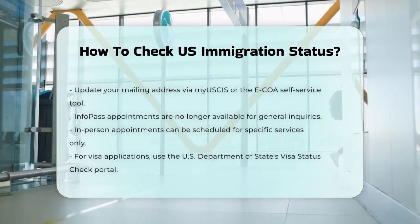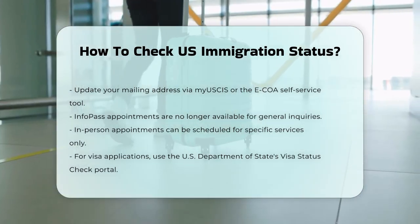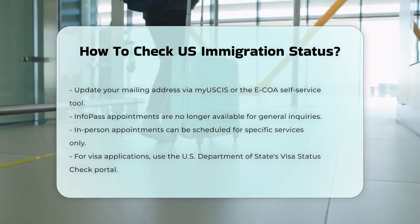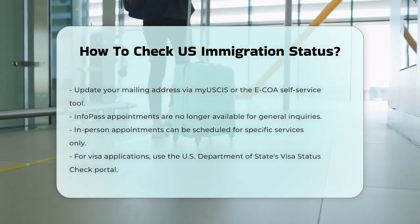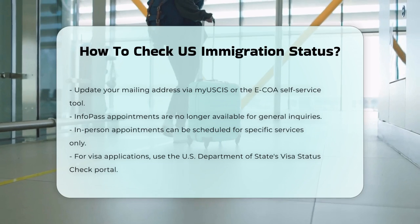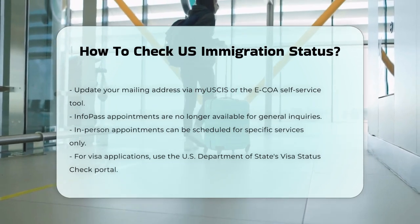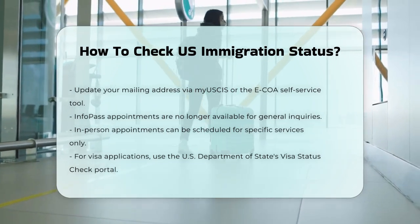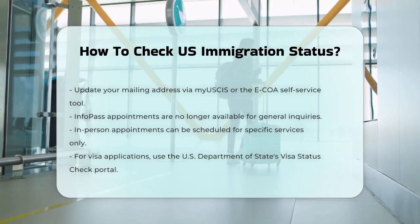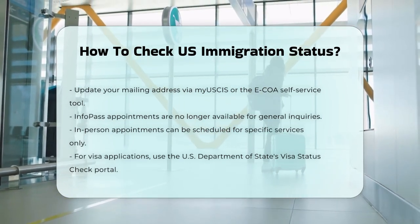Lastly, if you're checking the status of an immigrant or non-immigrant visa application, you can use the U.S. Department of State's Visa Status Check Portal. Here, you'll select your visa application type and enter your case number to get the latest information.